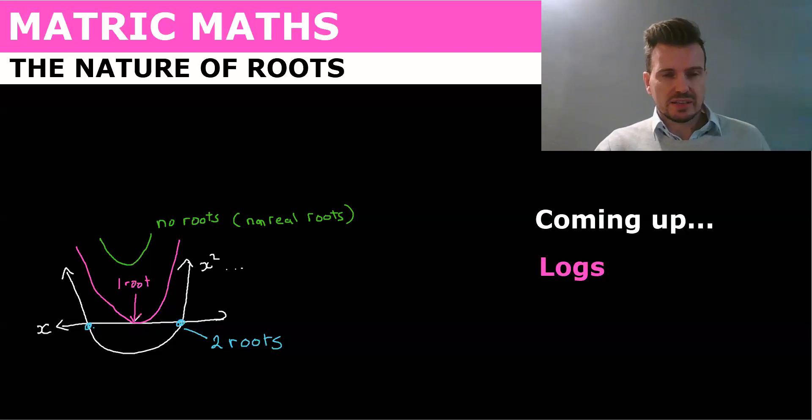So if you had a perfect square and you got two answers that were exactly the same for your x roots, that would be the pink. So let's look at our quadratic equation.